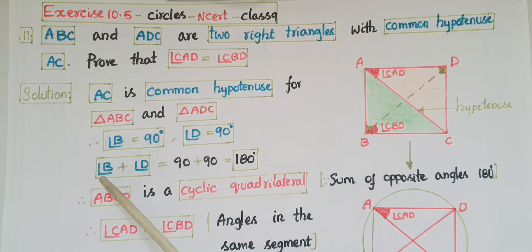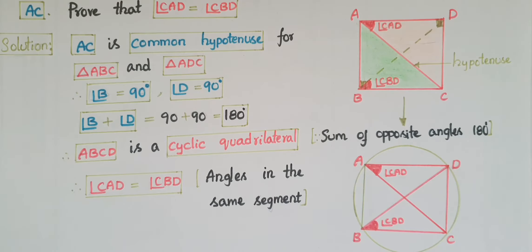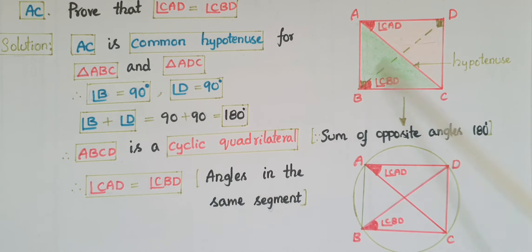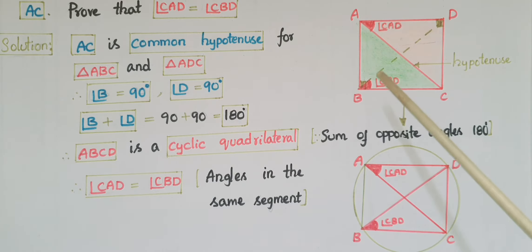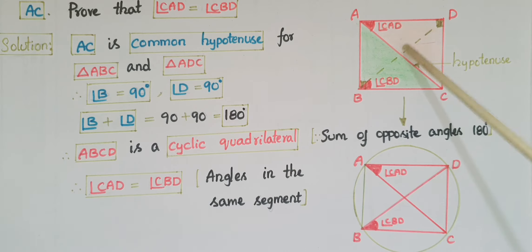If you add these two angles, angle B plus angle D equals 90 plus 90, that is 180 degrees. We have to prove that angle CAD is equal to angle CBD. Since angle B plus angle D is 180 degrees, and we know that if the sum of a pair of opposite angles is 180 degrees, then that quadrilateral is a cyclic quadrilateral. So here ABCD is a cyclic quadrilateral.